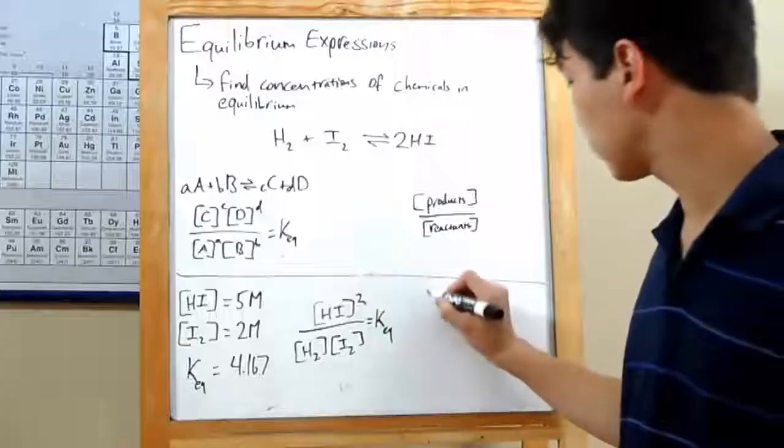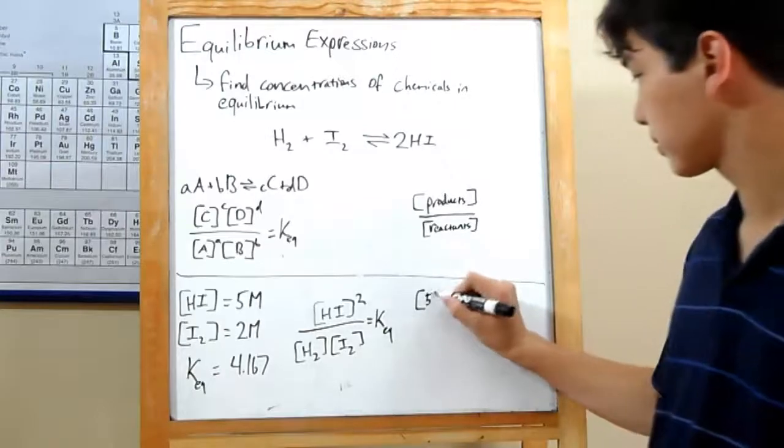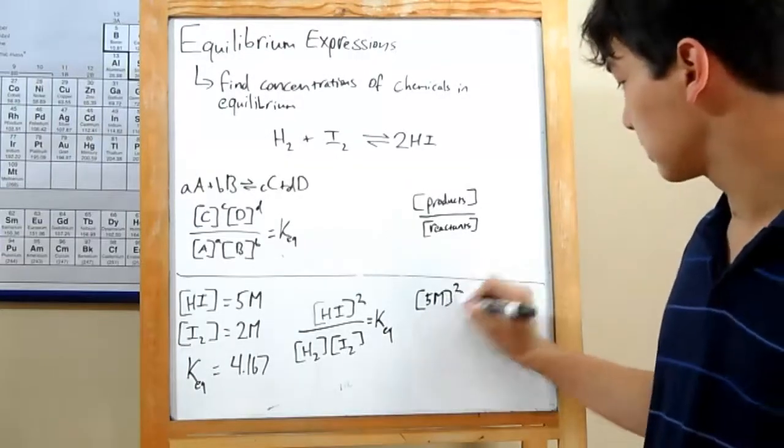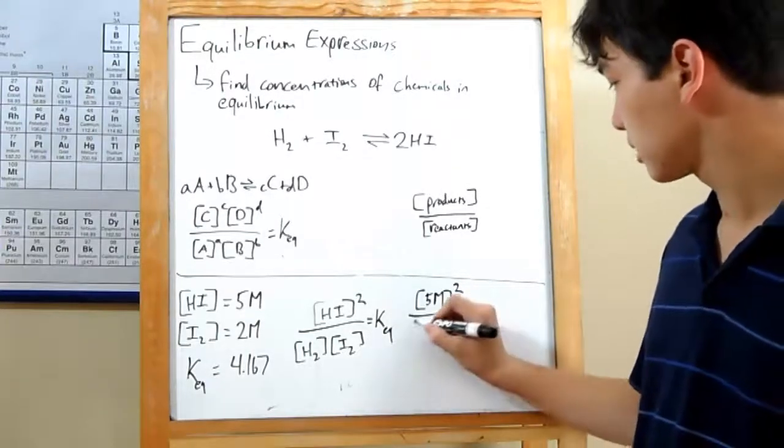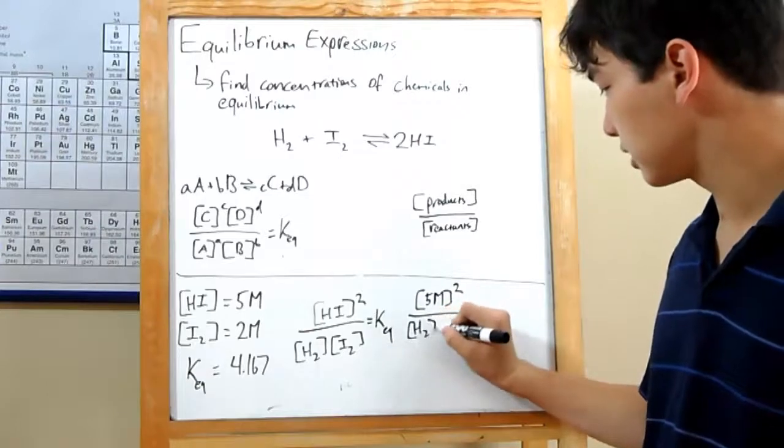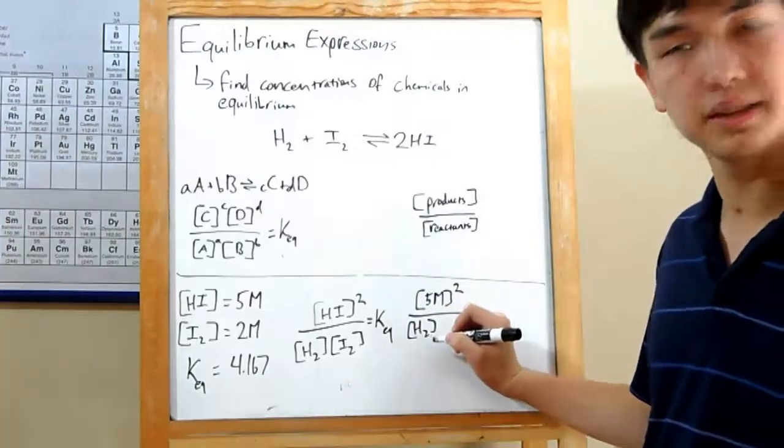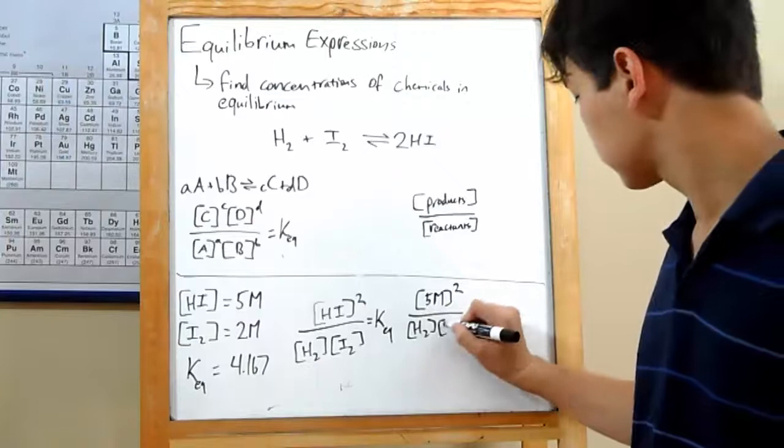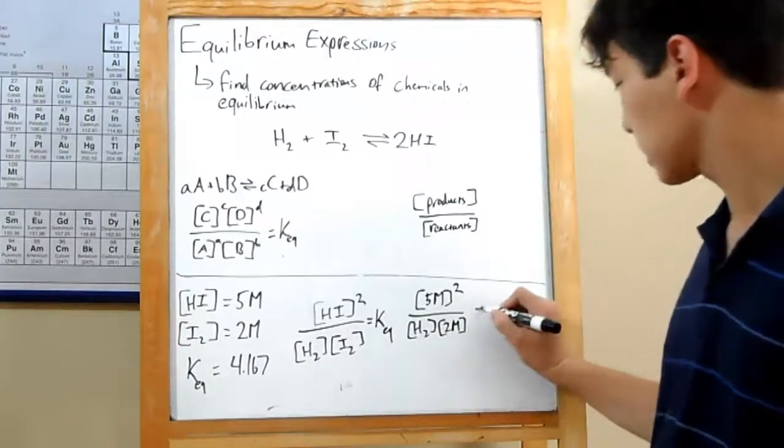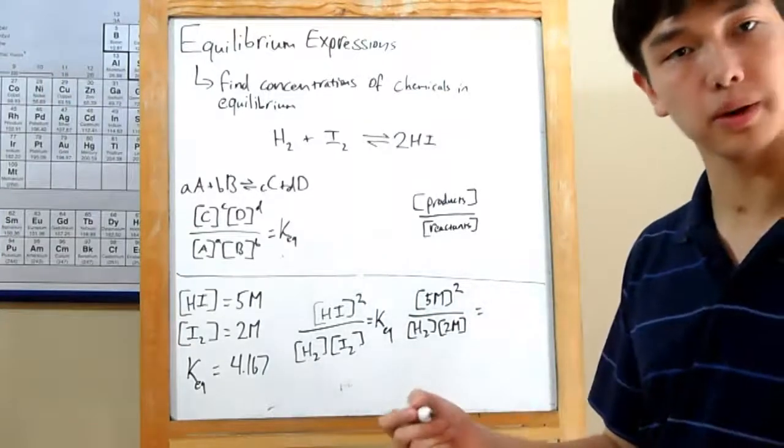Let's say we know that we have 5 molars of HI. Remember, that's squared over an unknown concentration of H2, but a concentration of I2 of 2 molars. And we're going to set that equal to a Keq of 4.167.